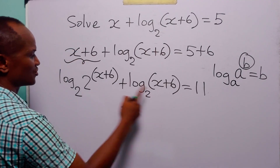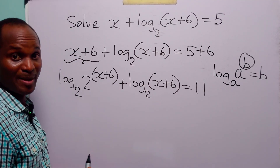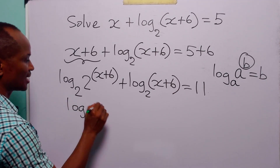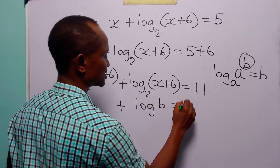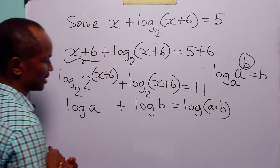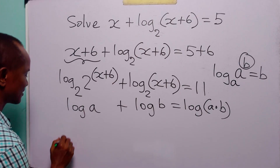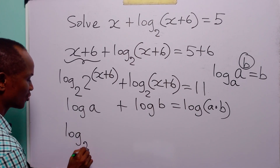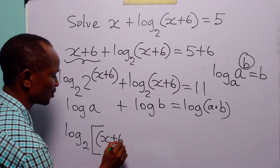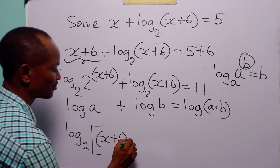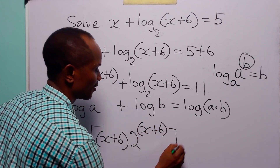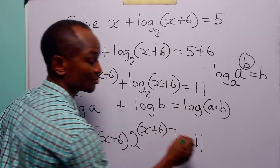The next thing we are going to do is combine these two terms. You remember how we add logarithms: log a plus log b is equal to log a times b. So we can write this left-hand side as log to base 2 of x plus 6 multiplied by 2 to the power x plus 6, and this is still equal to 11.